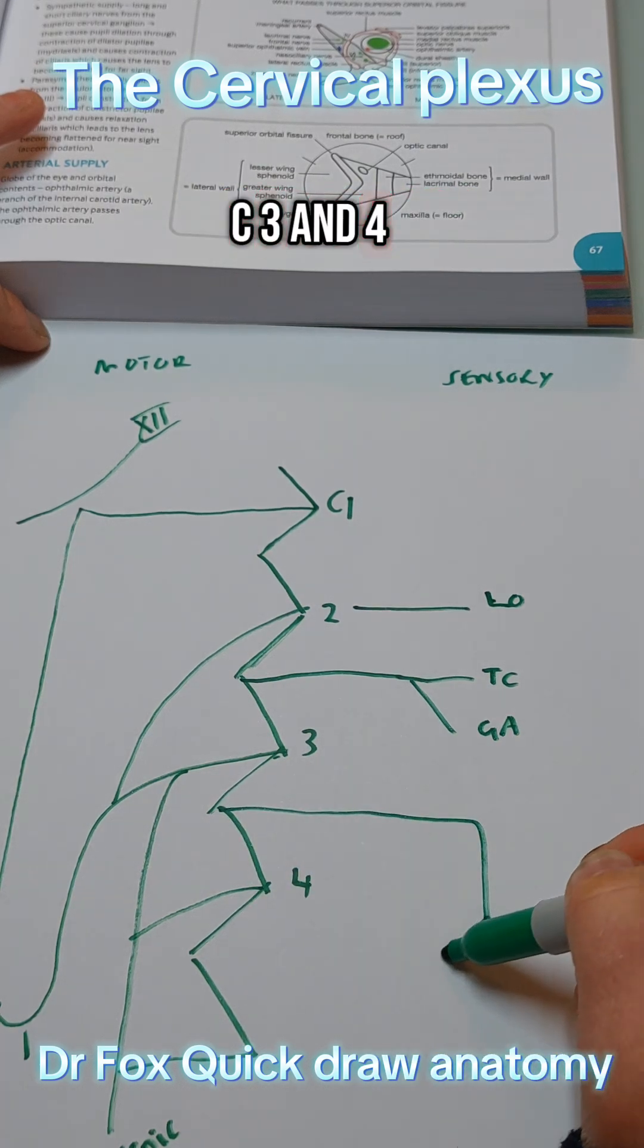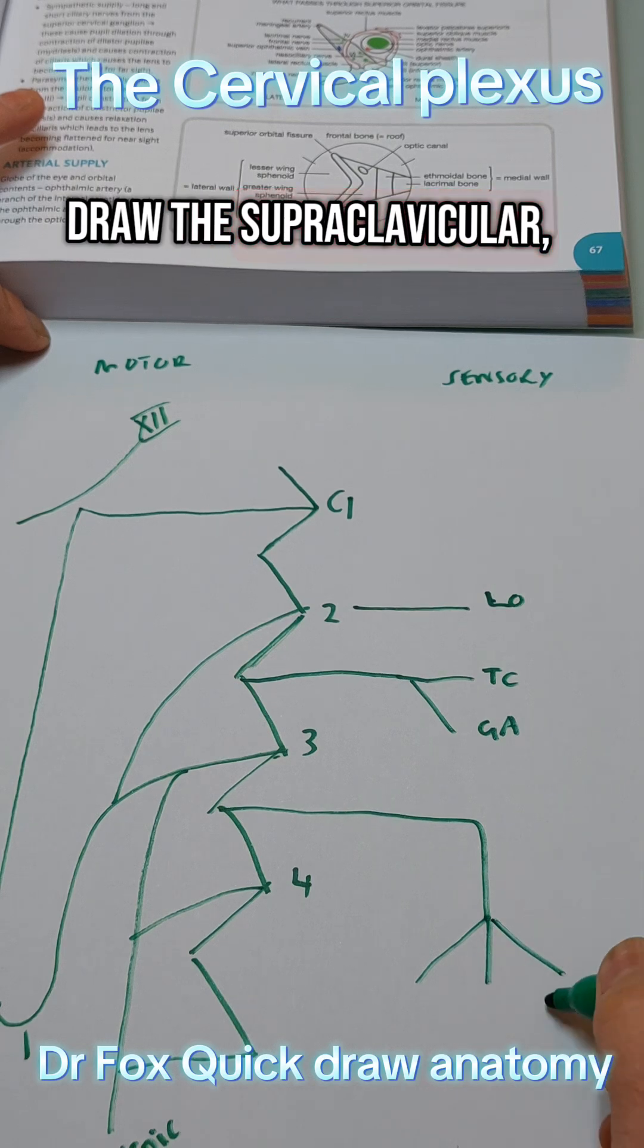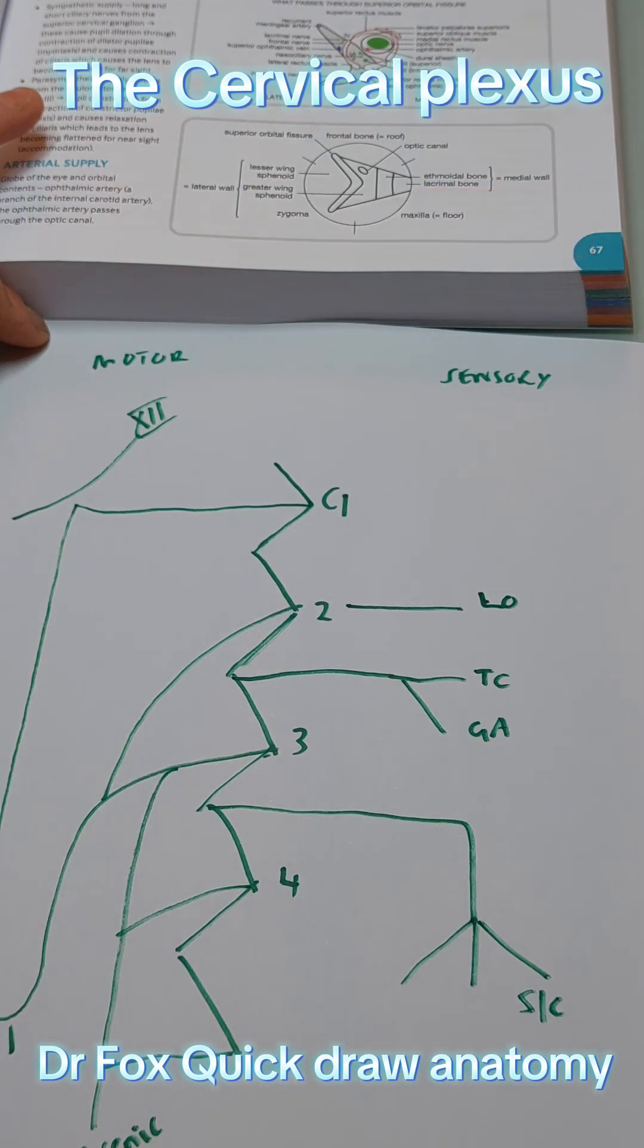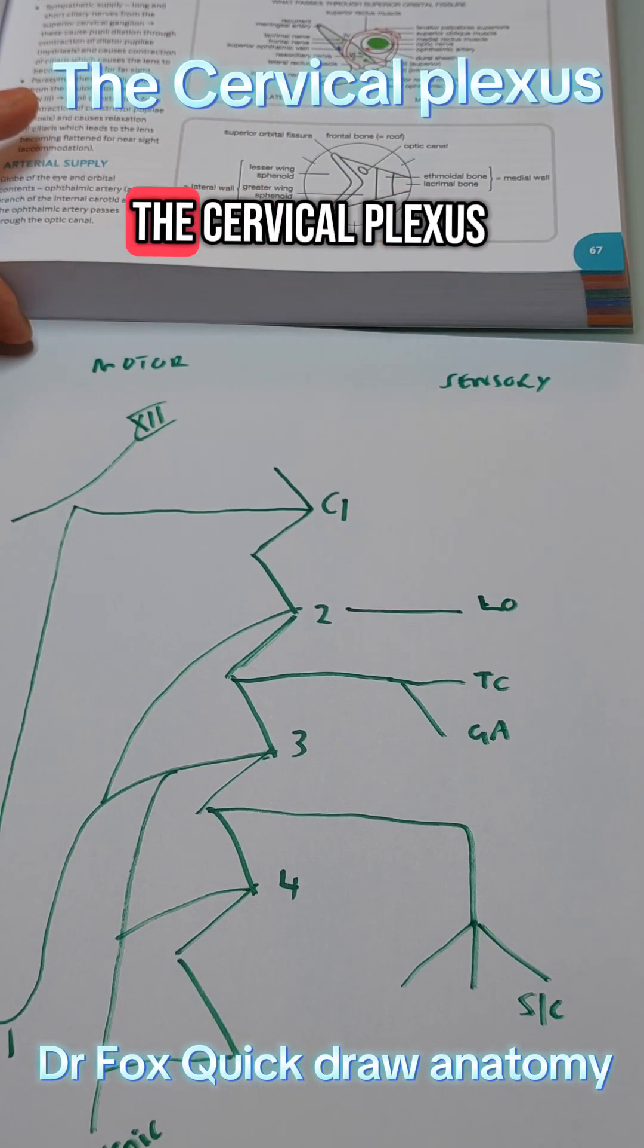And then between C3 and C4 draw the supraclavicular. This has three different areas, that's why I draw three separate branches. And that is the cervical plexus.